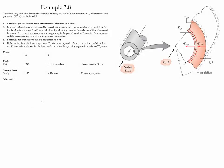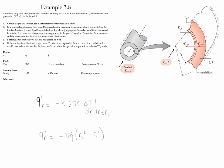We can calculate heat removal using either conduction or total heat generation. Using Fourier's law, the heat removed per unit length equals negative k times 2-pi-r — which is the perimeter, making it per unit length — times dT/dr, evaluated at r equal to R1. The alternative method uses heat generation: Q-prime equals negative pi times Q-dot times the quantity R2-squared minus R1-squared. Evaluating the temperature distribution derivative at R1 shows that both methods give equal results.